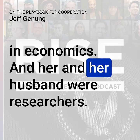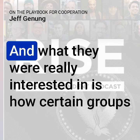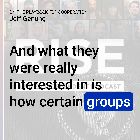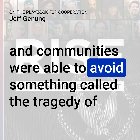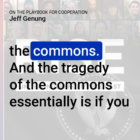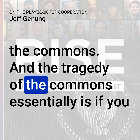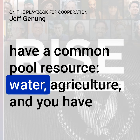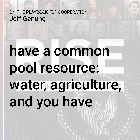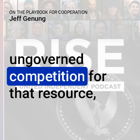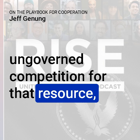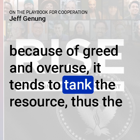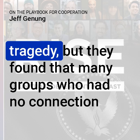She and her husband were researchers, and what they were really interested in is how certain groups and communities were able to avoid something called the tragedy of the commons. The tragedy of the commons essentially is: if you have a common pool resource — water, agriculture — and you have ungoverned competition for that resource, because of greed and overuse, it tends to tank the resource. That's the tragedy.